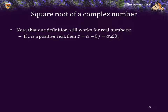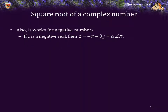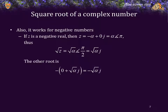Notice that this definition continues to work for real numbers, giving the answer we expect. If z is a positive real, then z is equal to alpha plus 0j, or alpha phase 0. Thus, the principal square root of z would simply be the square root of alpha. The other root is the negative of the principal root, which is negative square root of alpha. It also continues to work for negative numbers. If z is a negative real, then z is alpha phase pi for an appropriate positive real alpha. Thus, the square root of z equals the square root of alpha phase pi over 2, which is the square root of alpha times j. The other root is the negated square root of alpha times j.